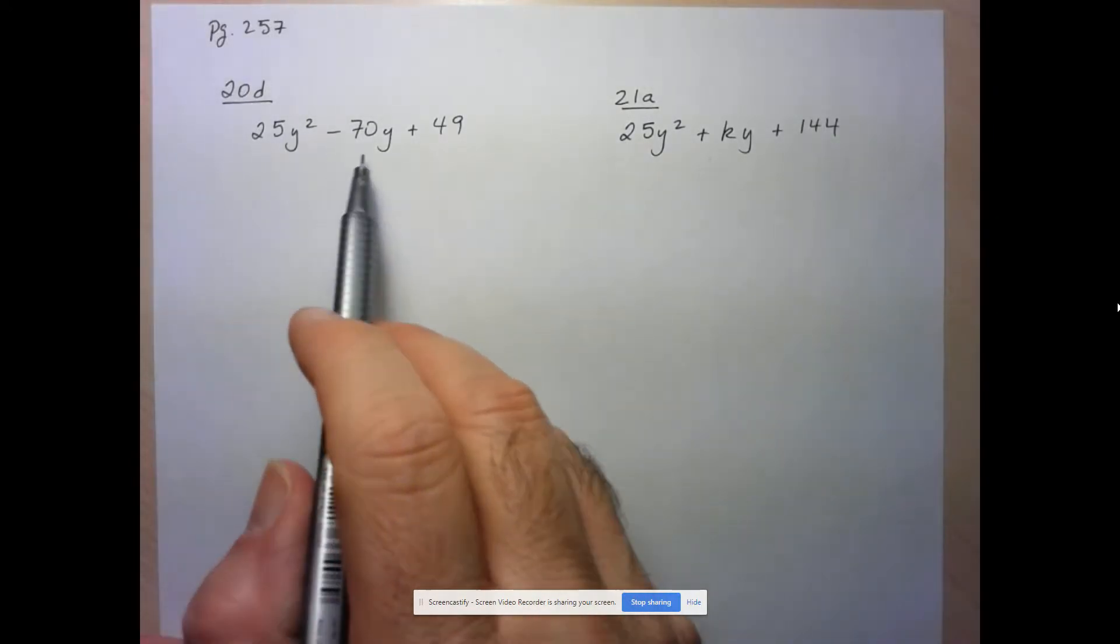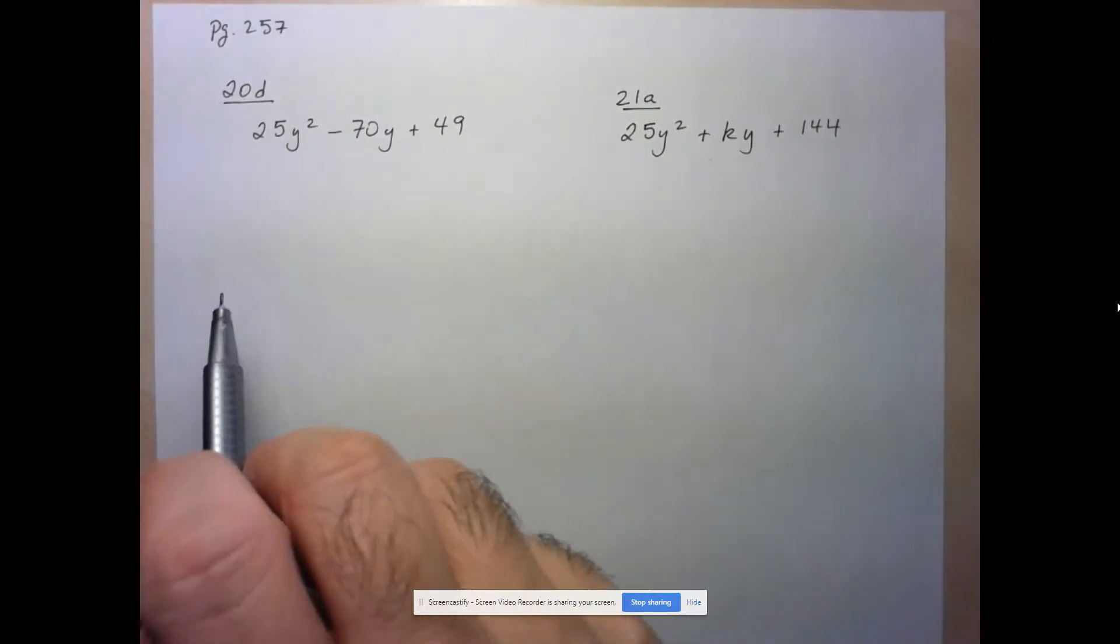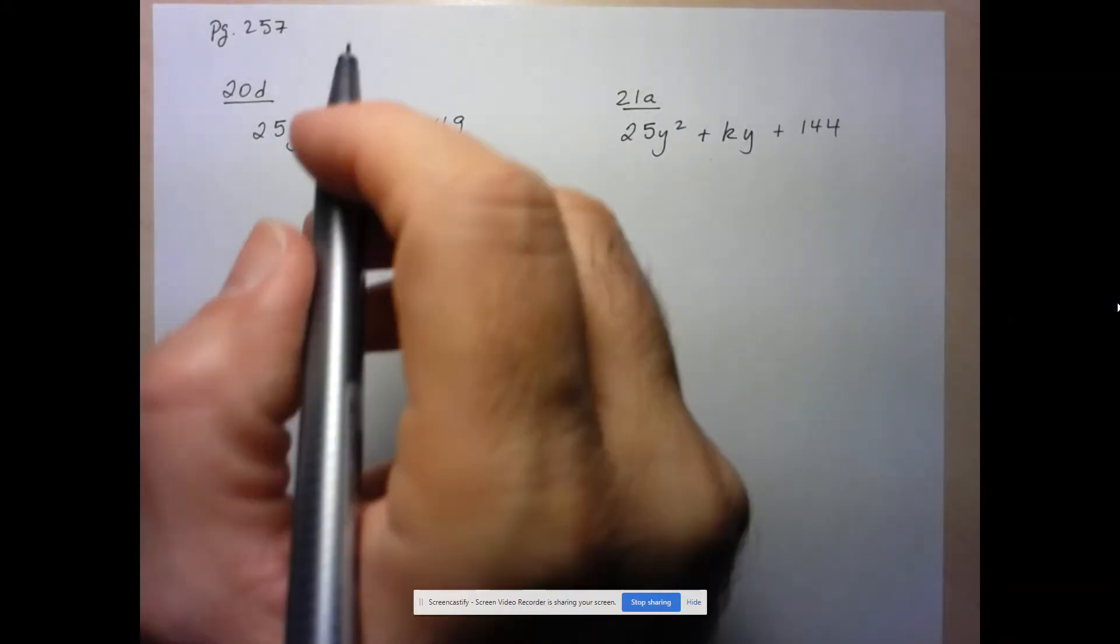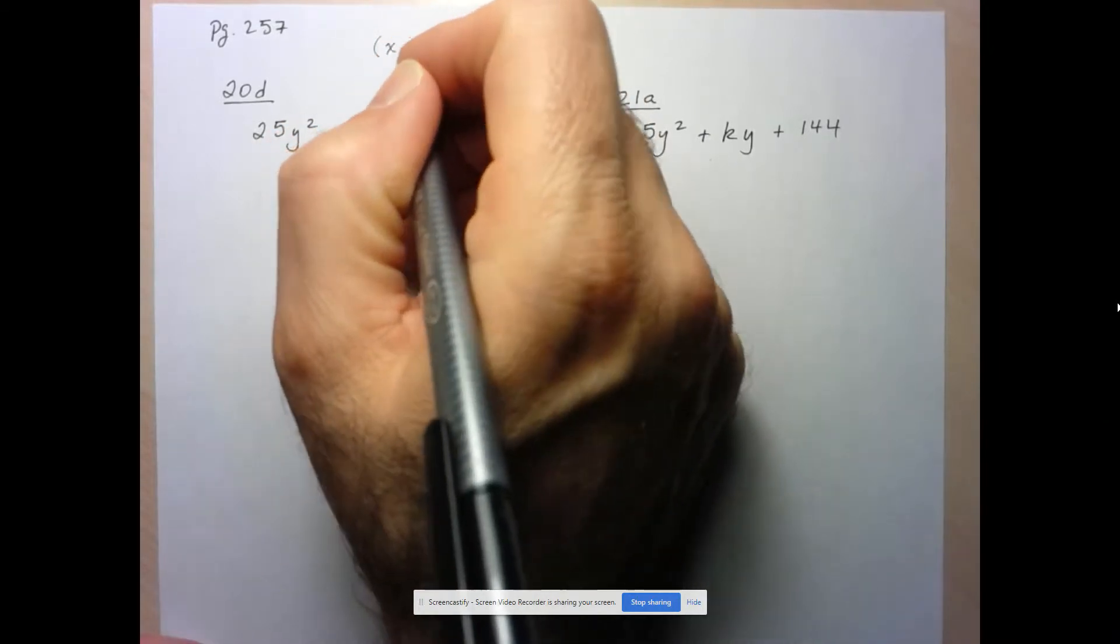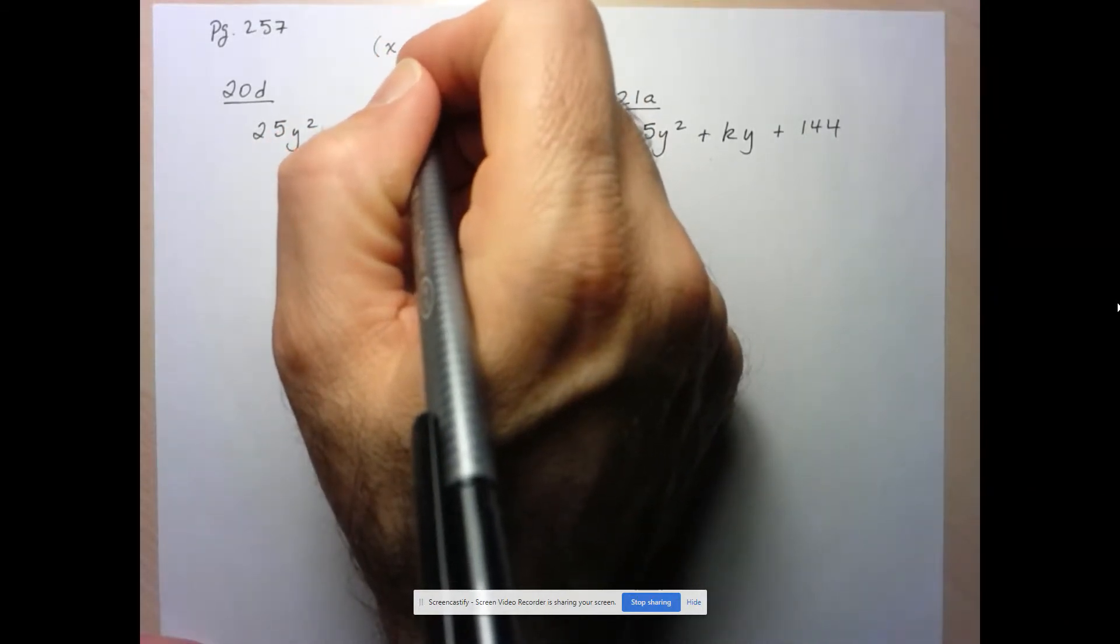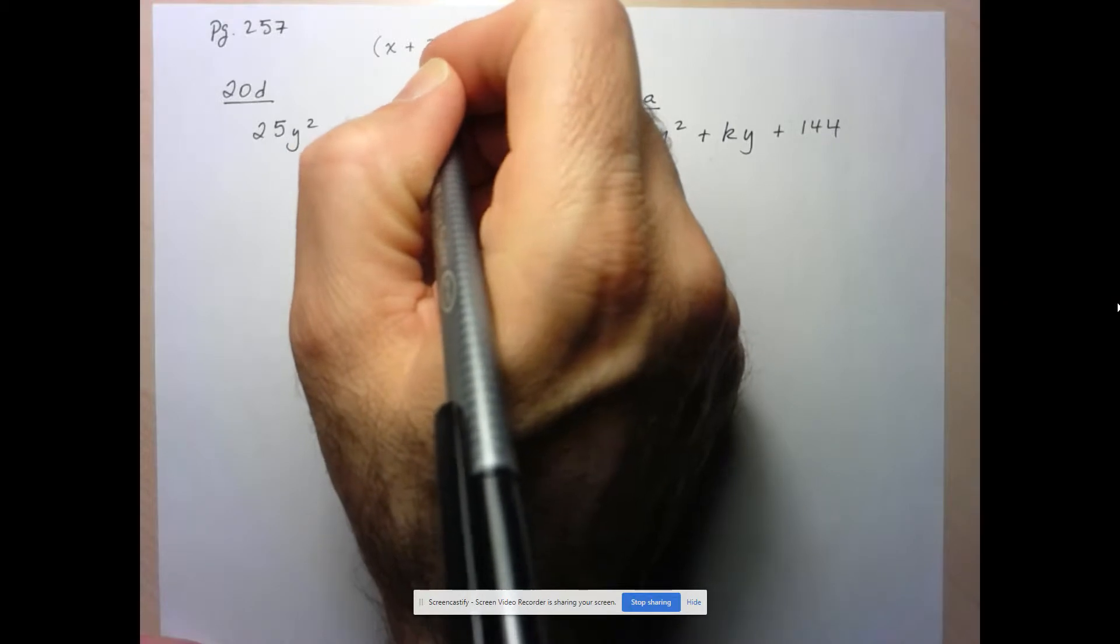So one thing you could do is just factor the trinomial and show that it gives you a perfect square. But what I want us to recall, and hopefully this is how you would solve this problem, is if you have a perfect square, and I'll take an easy example here, let's say I have x plus 3 squared.